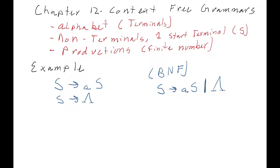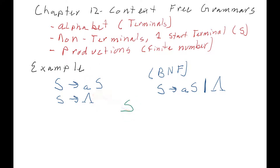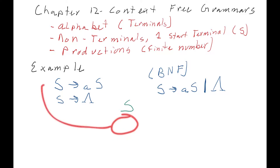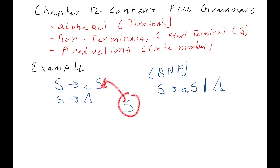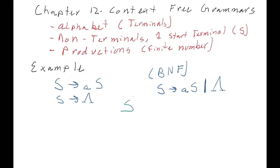So how would we generate words in this language? We start with the start symbol. The start symbol says we can either replace it with AS or with the null word. If we wanted to replace it with the null word, we could just erase it and we'd only have the null word left — so the null word is a word in this language. We could also replace S with AS. You can see we use this production rule to get there.